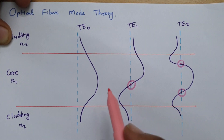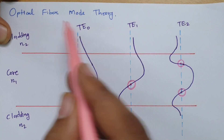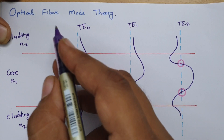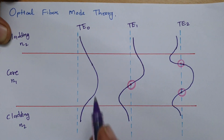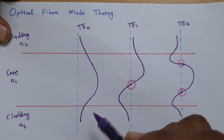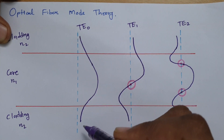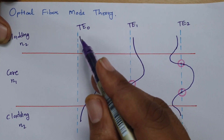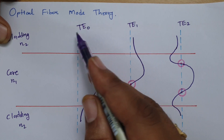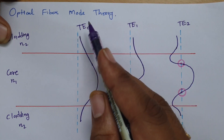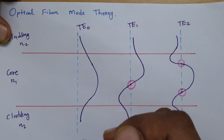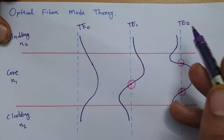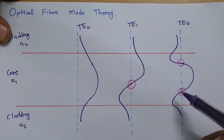That is how one can understand modes propagating in optical fiber. The order of a mode is based on how many times the field crosses the reference. If it crosses once, it is TE1; if it does not cross at all through the core, it is TE0; and in TE2 mode, two crossings happen.